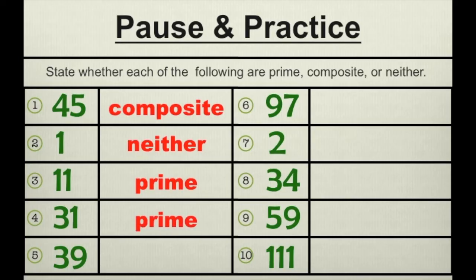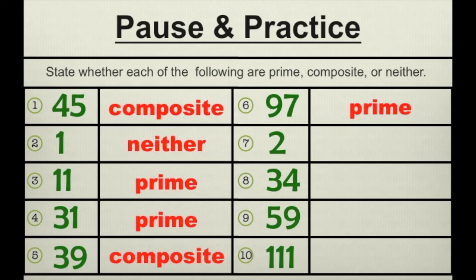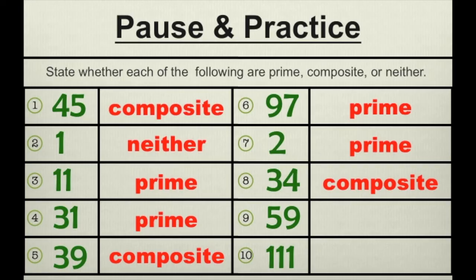Number five, 39 is composite. Number six, 97 is prime. Number seven, 2 is prime also. Number eight, 34 is composite. Number nine, 59 is prime. And number 10, 111 is composite.